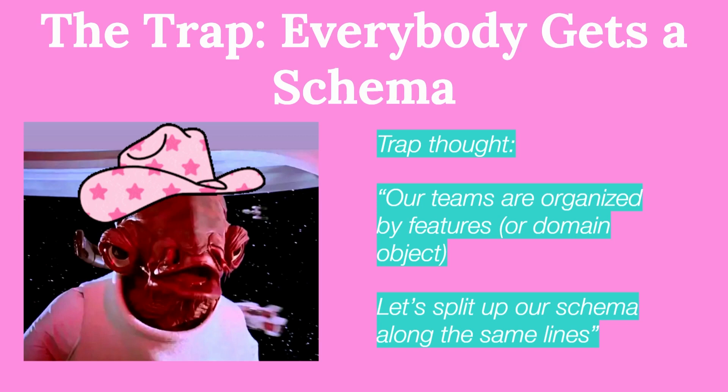Our next trap is everybody gets a schema. Our teams are organized by features or domain object, so let's just split up our schema along the same lines. This does help solve the problem of who owns which parts of the schema, and it solves some ownership problems. But it also introduces problems like stitching the schema together while avoiding collisions, and maintaining consistency across multiple schemas, as well as maintainability across time and change. Making sure your schema has types that align correctly, or managing duplicate types, becomes a major focus of engineering time. To avoid the trap: build a single schema that accurately describes your data and your web API layer. Power that schema with business logic separated into units — services or libraries — owned by your teams, and make it easy to update the central schema.